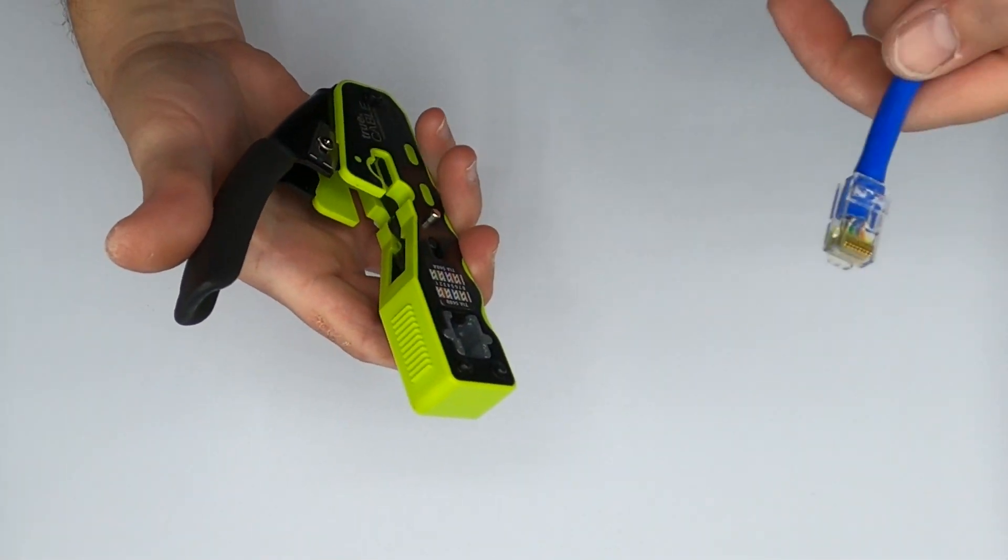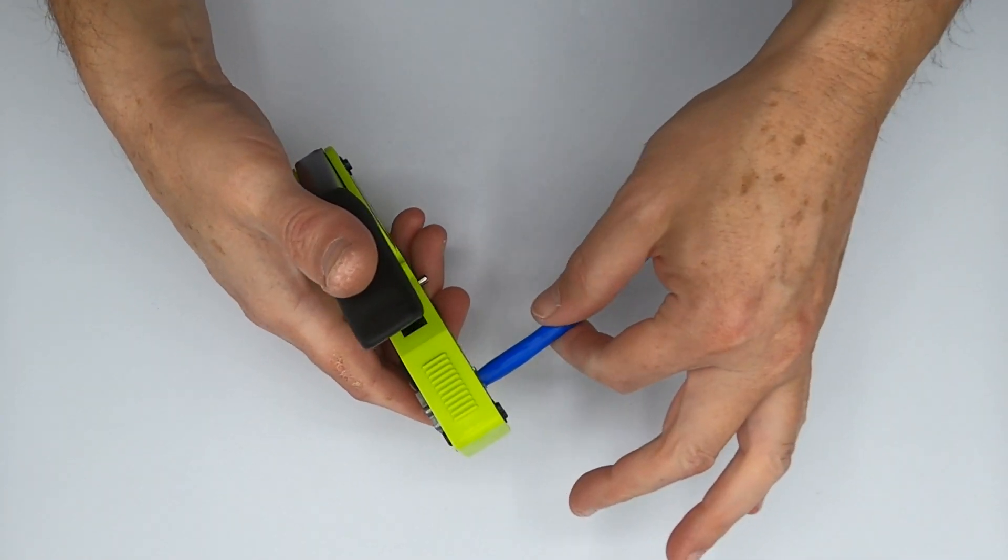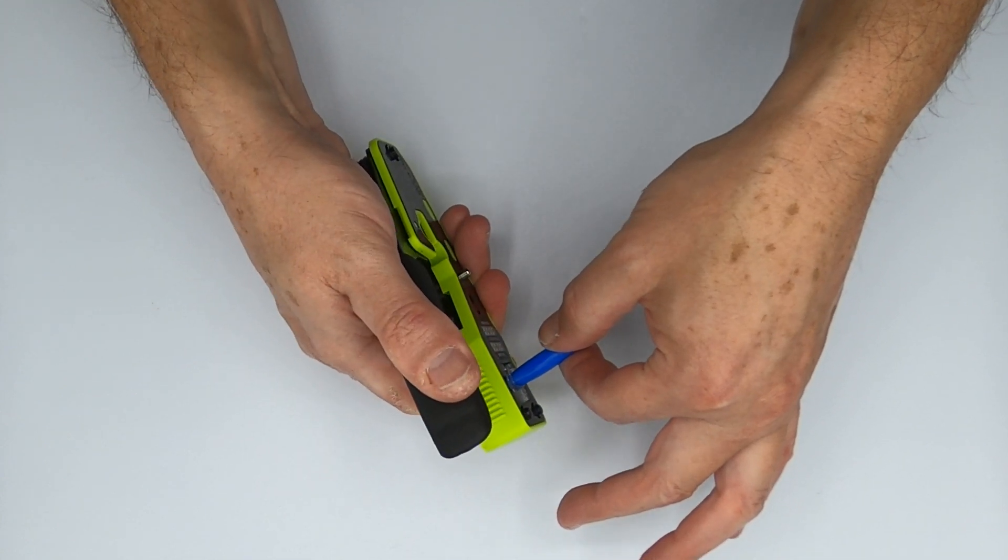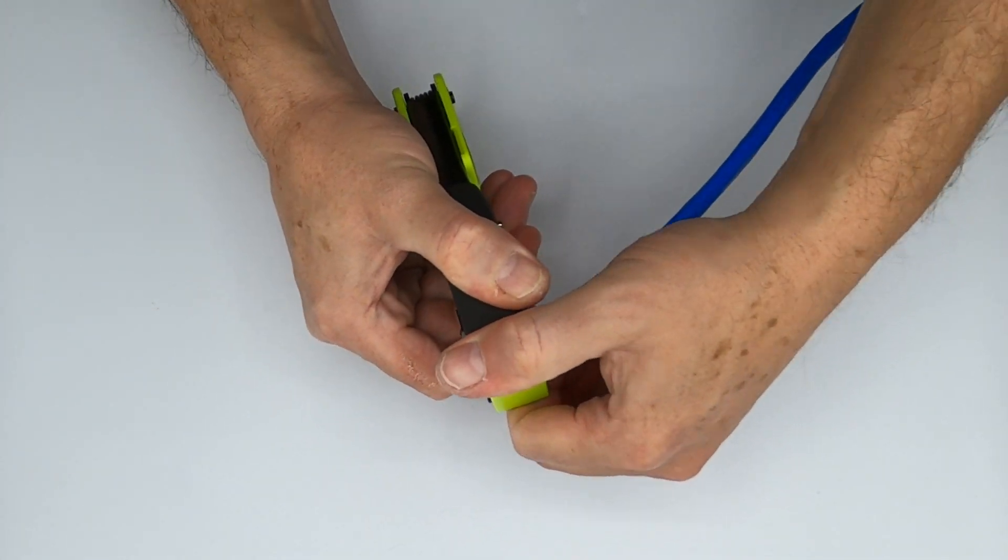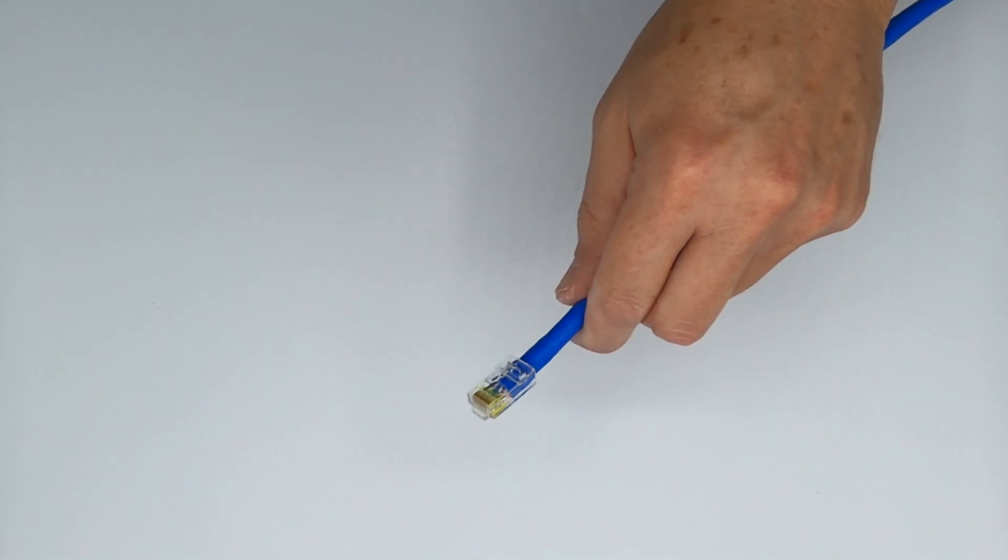So you unlock your tool and you put your plug in. You don't have to use excessive force. Just lightly put it in there, hold it. And then when you start to close it, you can take your hand off, push it all the way down, lock your tool, check your work.